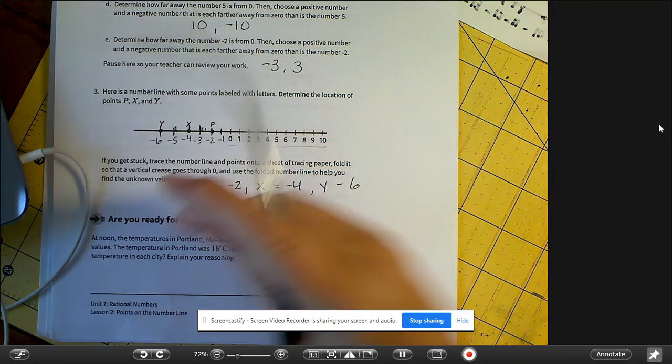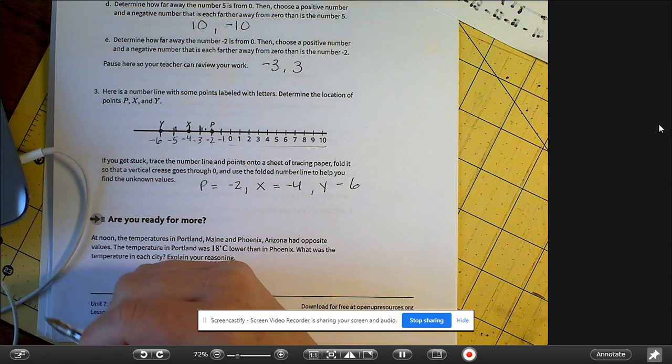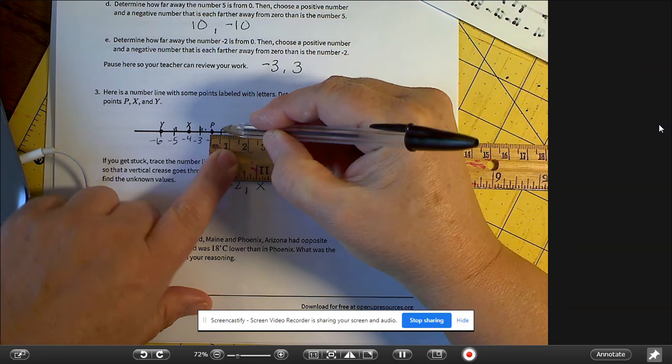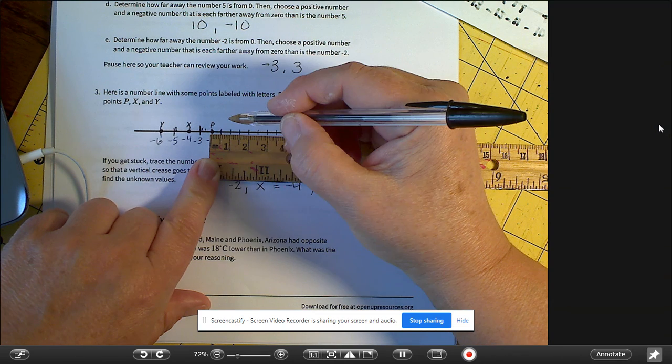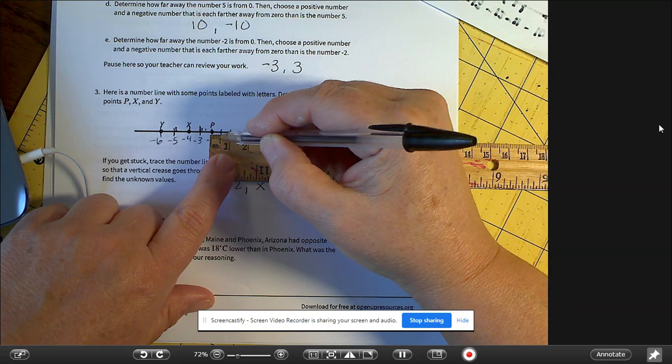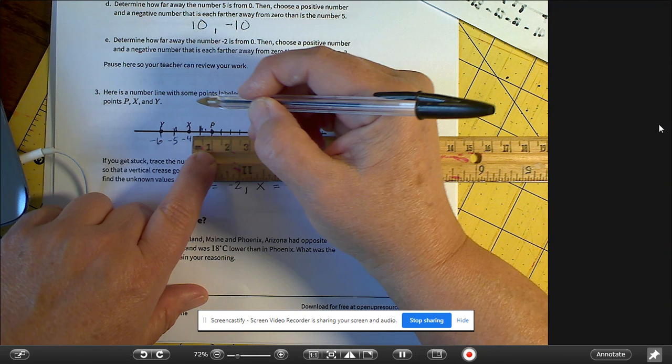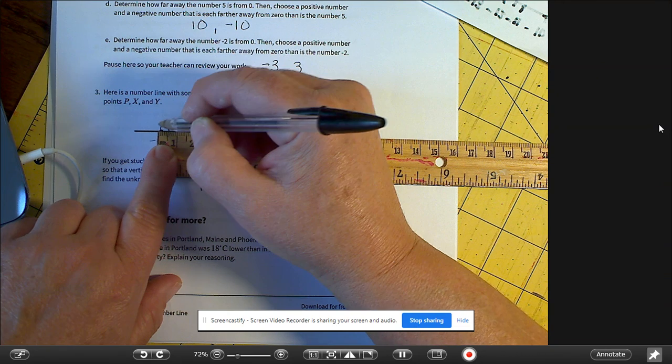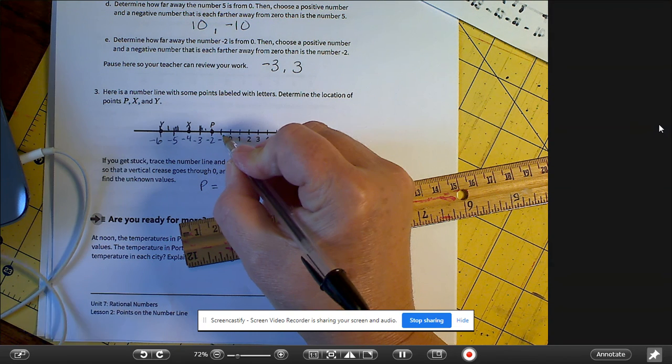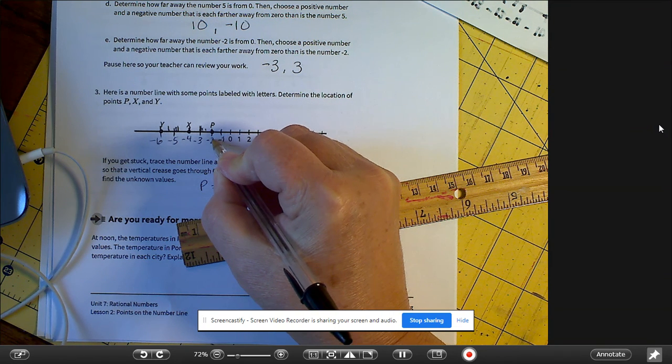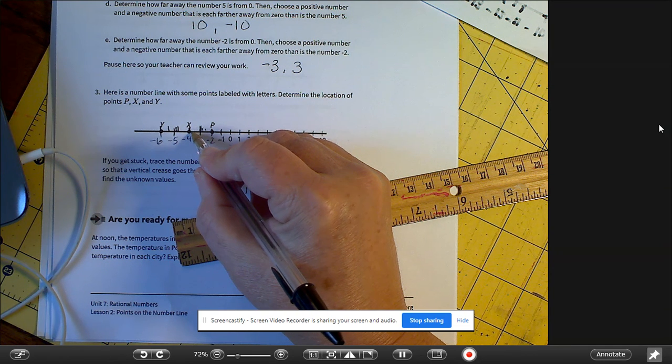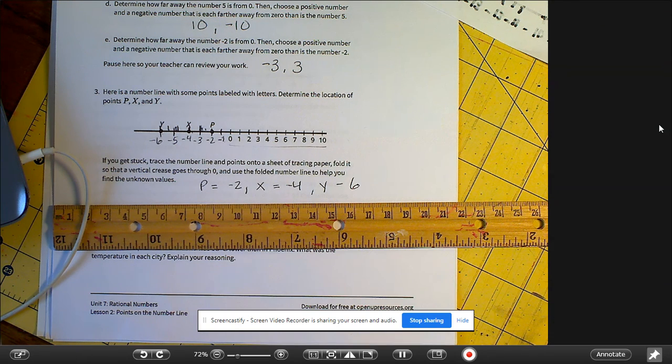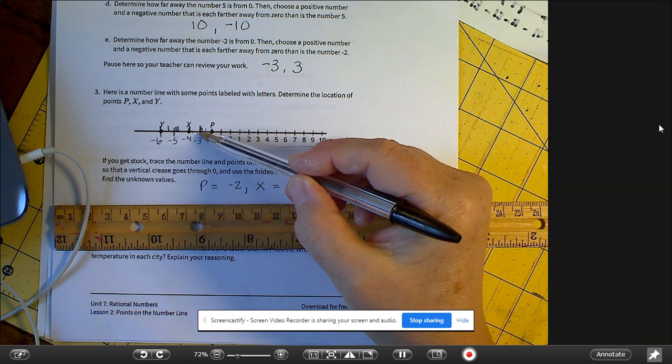All right. So here is a number line with some points labeled with letters. Determine the locations of P, X, and Y. So what I did is I took my ruler and I see that it's one centimeter, these little lines are millimeters, and it looks like they're all one centimeter away. So I did a mark here, a mark here, really it should be here, here, and here. So I kind of labeled these wrong, this is negative 1, negative 2, negative 3, negative 4, I'm giving it as negative 6, the book has it a little bit different.